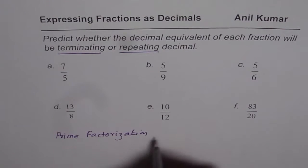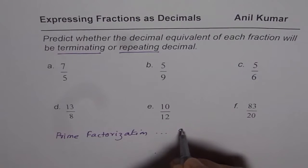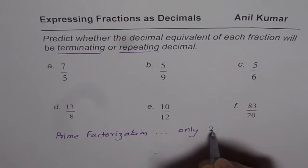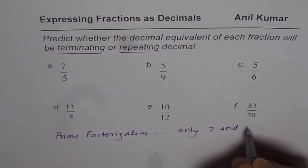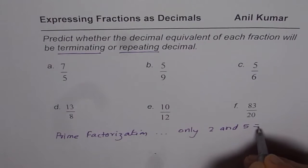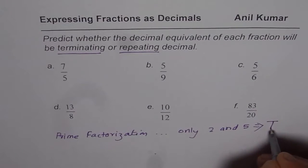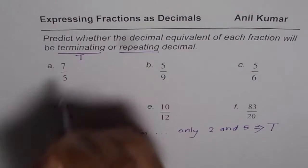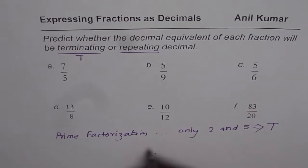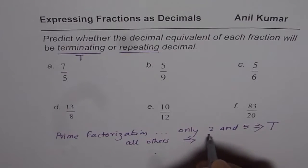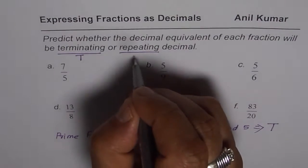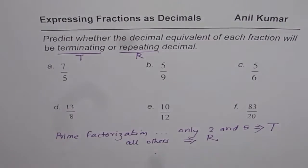Now, if the prime factors are only 2 and 5, then we get terminating decimals. So that leads to terminating decimals. Let me write T here. But all others will give you repeating decimals. Let me write R here. You get the point? So that is the key and simple test.